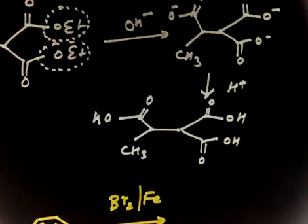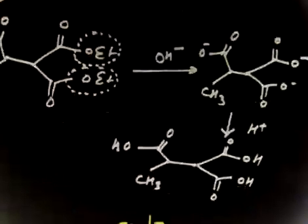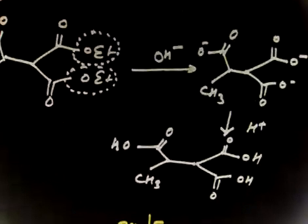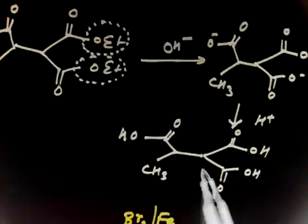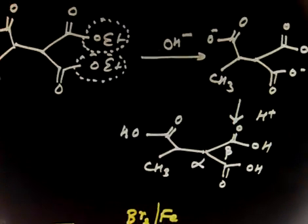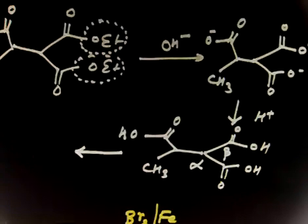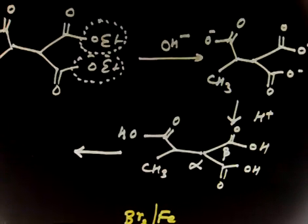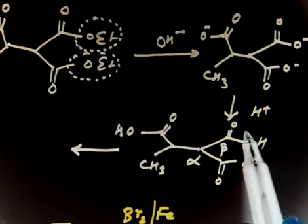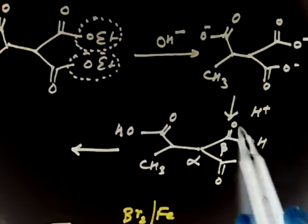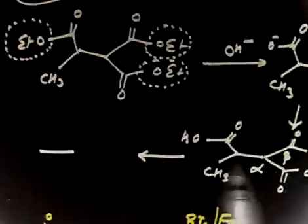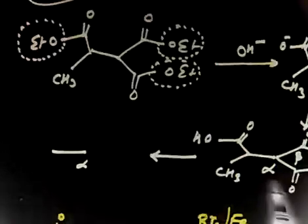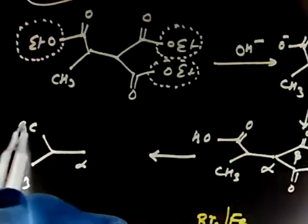Now if you heat this compound — even a small heating is required, so even if the question does not write 'heat,' you have to assume small heating is given — you release one acid. Beta keto acids easily decarboxylate. This carbon is the alpha carbon and this next carbon is beta, so at the beta position you have a keto group. If I release CO2 from this beta keto acid, I remove that acid group.